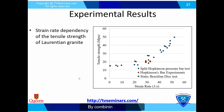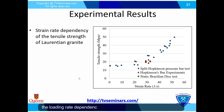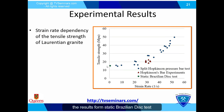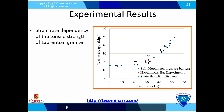By combining the results from both experiments, the loading rate dependency of the tensile strength could be achieved. In this graph, the results from Brazilian disk tests are combined with the results of the dynamic tests, as shown in the figure.